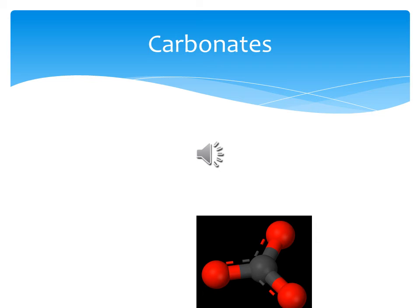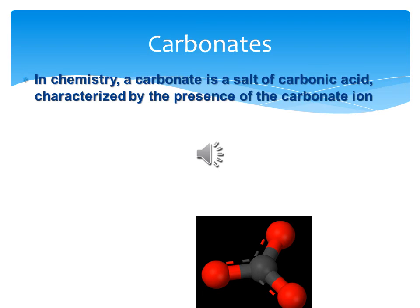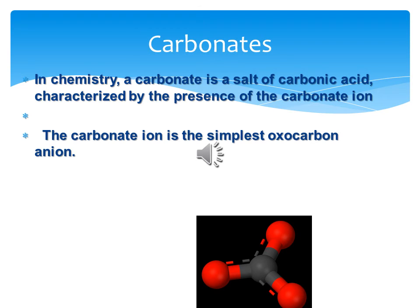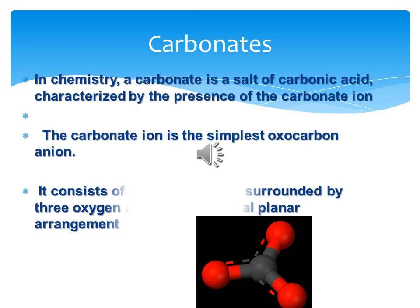Next, I will be talking about carbonate. The carbonate ion is the simplest oxycarbon anion. It consists of one carbon atom surrounded by three oxygen atoms, and it is usually in a trigonal planar arrangement.